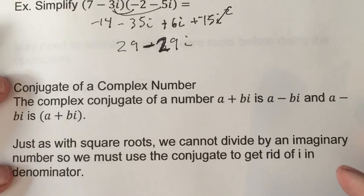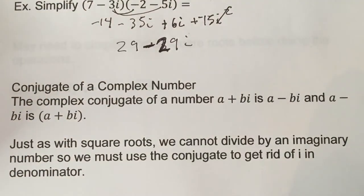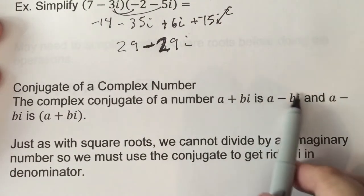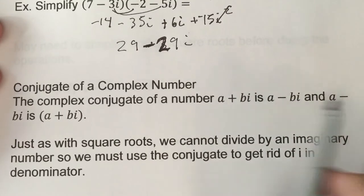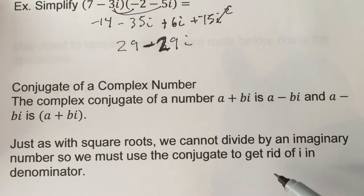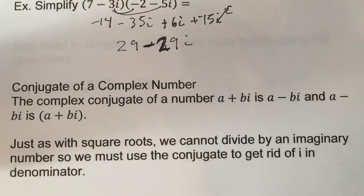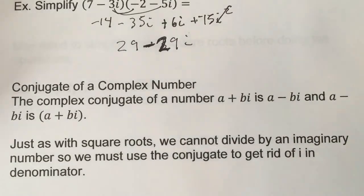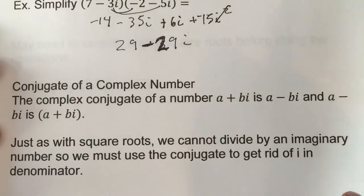Just like with polynomials, we can find the conjugate of a complex number. If we have a plus bi, its conjugate is a minus bi, and vice versa. Just like with square roots, we can't divide by an imaginary number — it adds a whole new dimension. So to get rid of it, we use the conjugate to eliminate the imaginary part from the denominator.